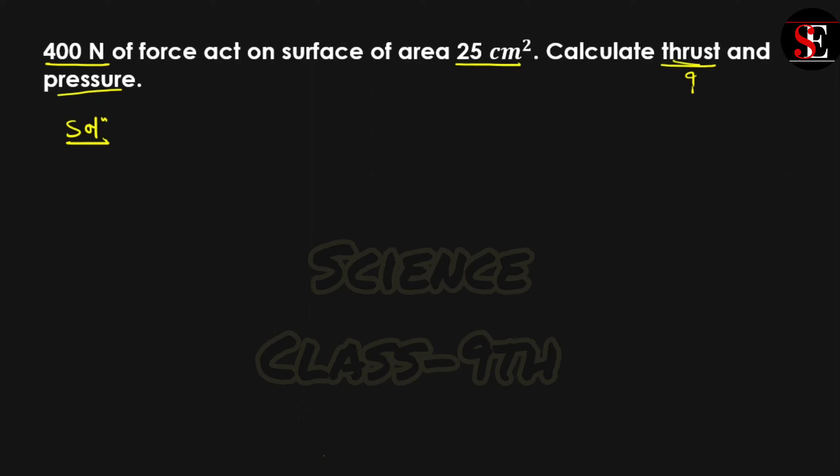According to the definition of thrust, you know very well that thrust is perpendicular force which is acting on any surface. When thrust is a force that acts perpendicular to any surface, then the force is already given here, meaning it is thrust. You don't have to calculate the value here, it's already given. The thrust is 400 N.